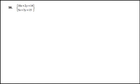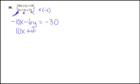In this problem, the first thing that I might notice is that I could make the X terms become 10X and negative 10X by multiplying this second equation by negative 2. 5 here, times that negative 2 would be negative 10X. 3 times the negative 2 would be minus 6Y. And 15 times the negative 2 would be negative 30. And then I'm going to copy equation 1 down, the 10X, the 2Y, and the 14.